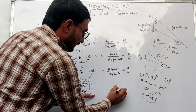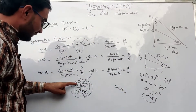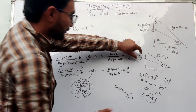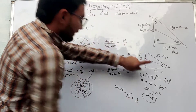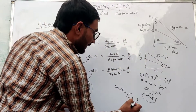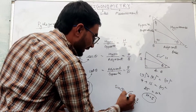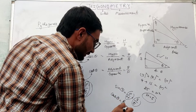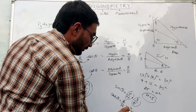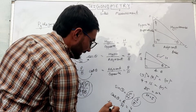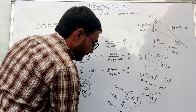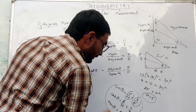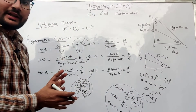So what will be sin theta? Sin theta equals P upon H — perpendicular upon hypotenuse — perpendicular is 3 and hypotenuse is 5, so sin theta equals 3 upon 5. Similarly, cos theta equals B upon H, which means 4 upon 5, and tan theta equals P upon B, which means 3 upon 4. So using this, we can calculate all trigonometric ratios.